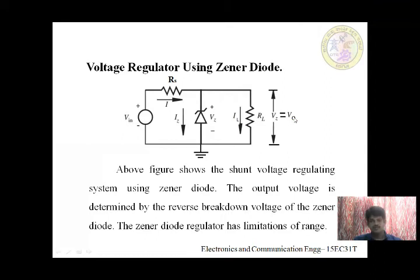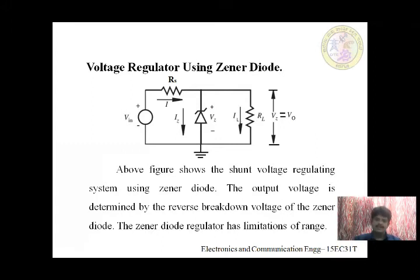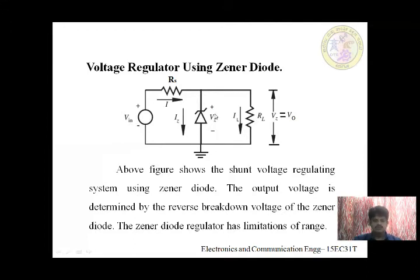The output voltage is determined by the reverse breakdown voltage of the Zener diode: V_Z = V_out. Whatever V_Z we design, that will be the output. The Zener diode regulator has a limitation of range — the output voltage cannot differ from V_Z. That is a disadvantage of the Zener diode regulator, but it is very simple, which is why it is most preferred over other types.